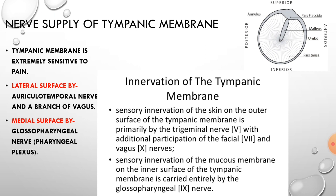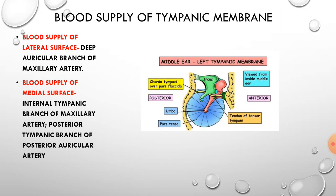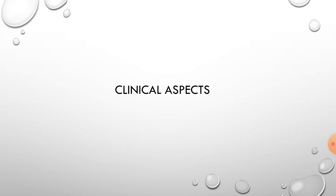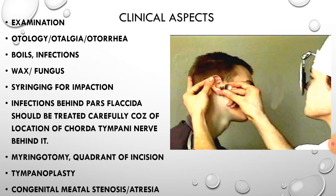The tympanic membrane is extremely sensitive to pain. The lateral surface is innervated by the auriculotemporal nerve and a branch of the vagus nerve, while the medial surface is innervated by the glossopharyngeal nerve and a twig from the pharyngeal plexus. The blood supply of the lateral surface is from the deep auricular branch of the maxillary artery, while the medial surface is supplied by the internal tympanic branch of the maxillary artery and the posterior tympanic branch of the posterior auricular artery.